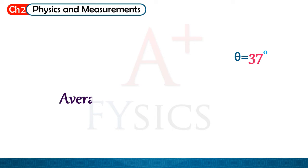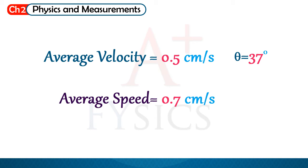Okay, what do these numbers mean? Average speed doesn't mean that the speed of the object was always 0.7 cm per second. The speed could be higher than that at some instances and lower than that at other instances. However, the average of all the speeds in the path is 0.7 cm per second. We noticed that average speed is a scalar quantity. It doesn't have a direction.